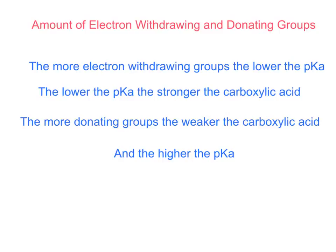Amount of electron withdrawing and donating groups. As mentioned before in class, the stronger the acid, the stronger the conjugate base — keep that in mind while you're watching the rest of this video. The more electron withdrawing groups, the lower the pKa. The lower the pKa, the stronger the carboxylic acid. The more donating groups, the weaker the carboxylic acid, and the higher the pKa.